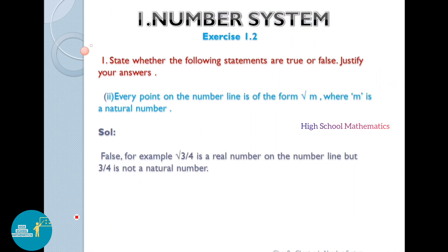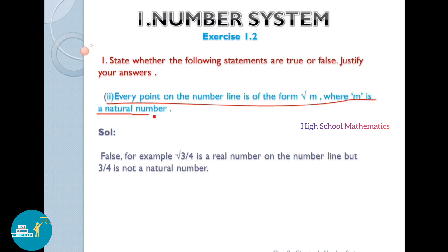First question, second one: every point on the number line is of the form square root of m, where m is a natural number. The given statement is false. For example, square root of 3/4 is a real number on the number line, but 3/4 is not a natural number.